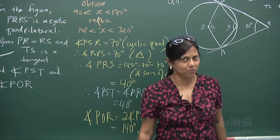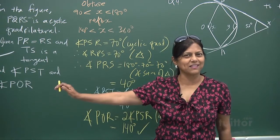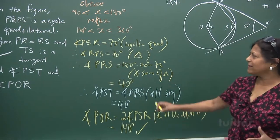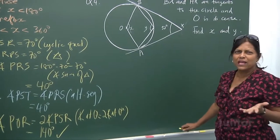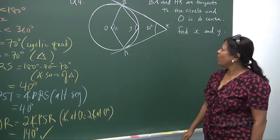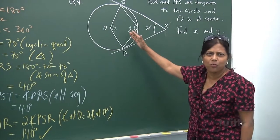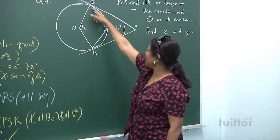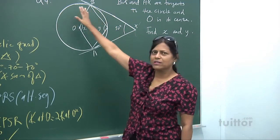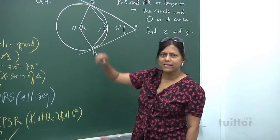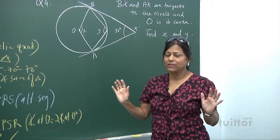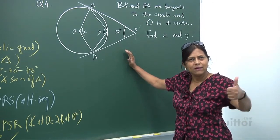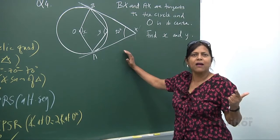Your vision is improving — six out of six! Now let's look at question four. We're only given one angle of 52 degrees. BX and AX are tangents to the circle, and O is the center. When you have tangents and a center, think: alternate segment, and also RHS congruency.